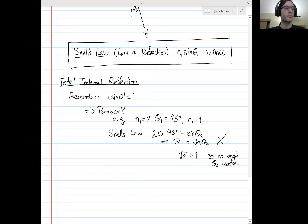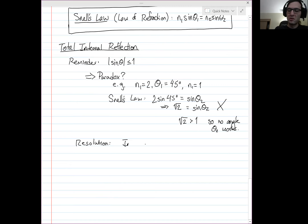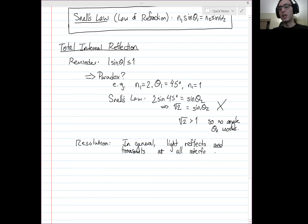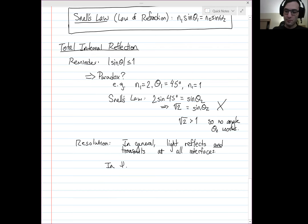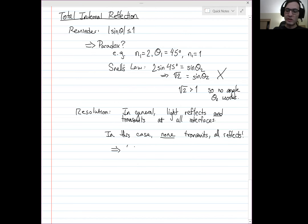What happens is even more surprising. In general, light reflects and transmits at all interfaces — some percentage reflects, some percentage transmits. But in this case, none of the light transmits through, because it would have to be at an angle that doesn't exist. In fact, all of it reflects. We get what is called total internal reflection. By having a sufficiently large change in wave speed between two media and a sufficiently large angle of incidence theta 1, you get that light just cannot get through that interface.